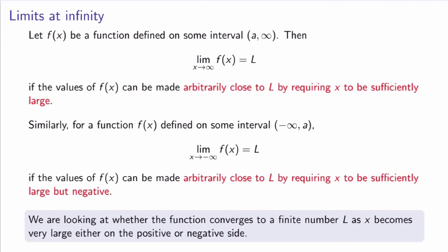What we're now interested in is the behavior of a function as x becomes very, very large, either on the positive or negative side. So let f of x be a function defined on some open interval between a finite number a and infinity. Then we say that the limit, as x goes to infinity, of f of x is equal to a finite number L if the values of the function can be made arbitrarily close to L by taking x to be very, very large.